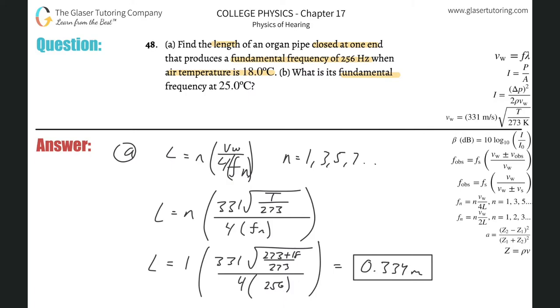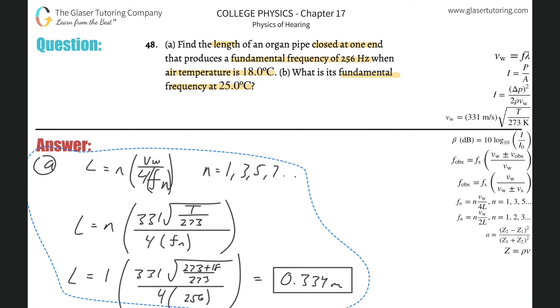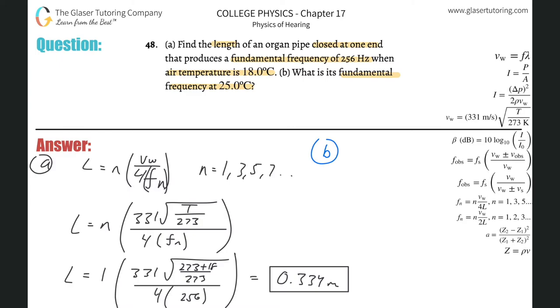Now letter B. It says, what is its fundamental frequency at 25 degrees Celsius? So now that we know the length of the tube, and we know that the speed of sound will be changing, we basically just have to do the formula again. Let me now just do B over here. So we have the same formula. The frequency of the nth harmonic will be equal to the nth harmonic multiplied by the velocity of sound divided by 4 times the length of the tube.